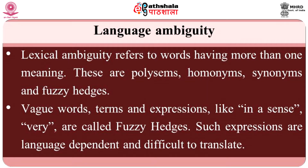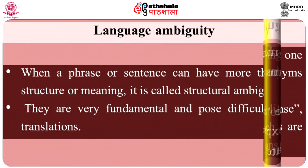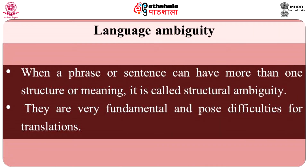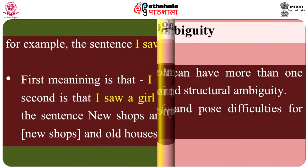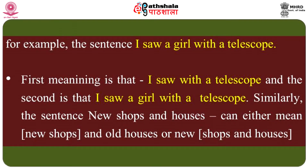The structure of a sentence often depends on semantics, not only on the type of words. When a phrase or sentence can have more than one structure or meaning, it is called structural ambiguity, and they pose fundamental difficulties for translation. For example, the sentence 'I saw a girl with a telescope' can have two meanings: first, that I saw with a telescope; and second, that I saw a girl who had a telescope. Similarly, the sentence 'new shops and houses' can either mean new shops and old houses, or both houses and shops are new.